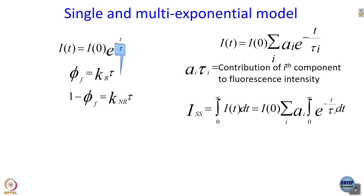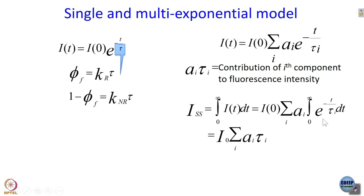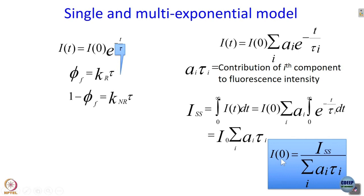Substituting the multi-exponential expression and taking constants outside the integral, we get: I_steady-state equals I(0) times the sum over i of a_i times tau_i — since the integral of e to the minus t over tau_i from 0 to infinity is tau_i. Or equivalently, I(0) equals I_steady-state divided by the sum over i of a_i tau_i. This is a correlation between steady-state intensity and the lifetimes. The take-home message is that it is not enough to look at only lifetimes; you must look at their amplitudes as well.